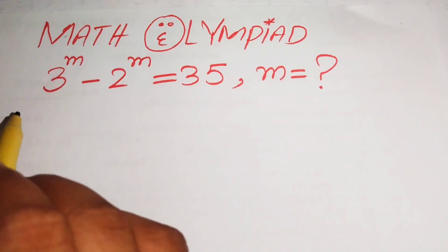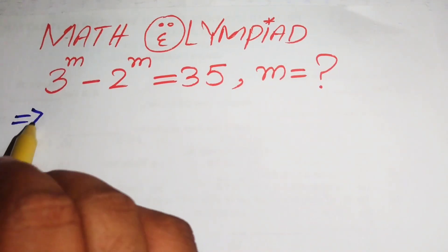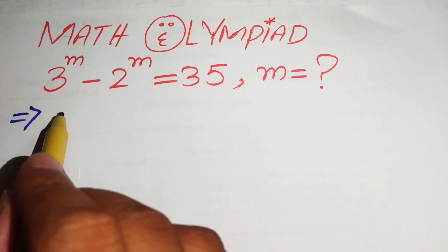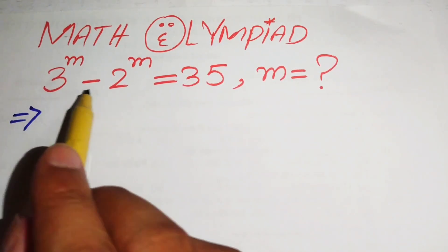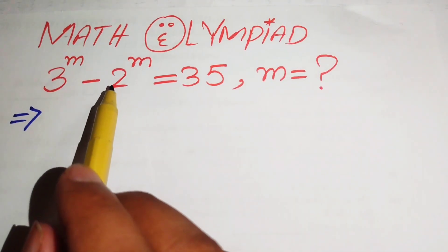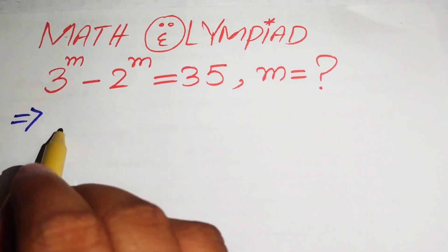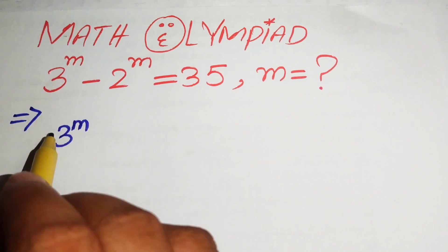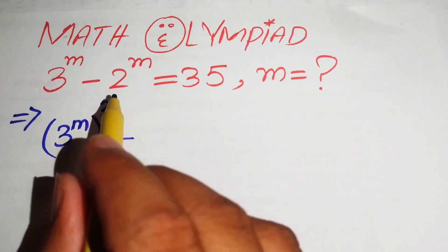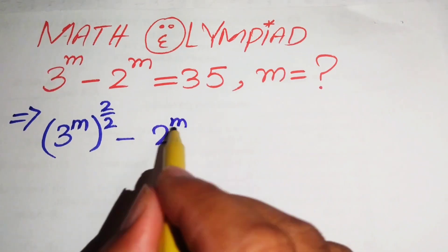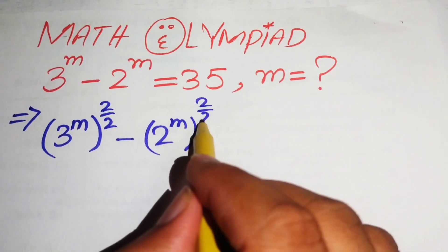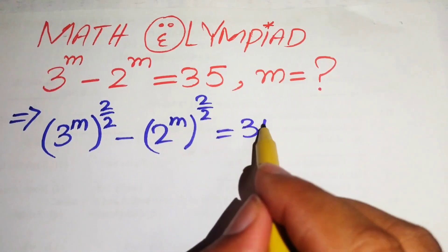The very first step is to rewrite this equation. We have 3 to the power of m, and we multiply the exponent of both terms by 2 over 2. So we write it as 3 to the power of m, its whole power 2 over 2, minus 2 to the power of m, its whole power 2 over 2, equals 35.